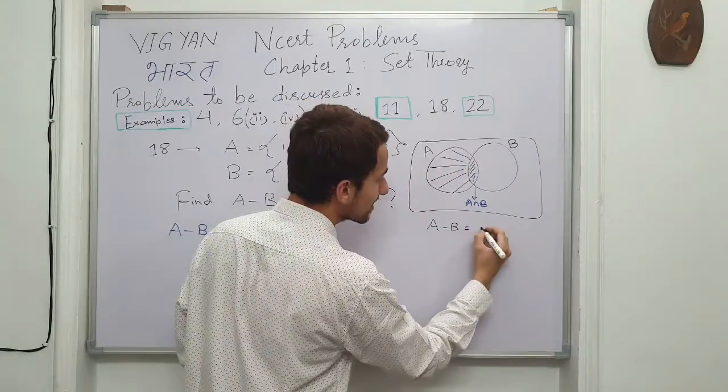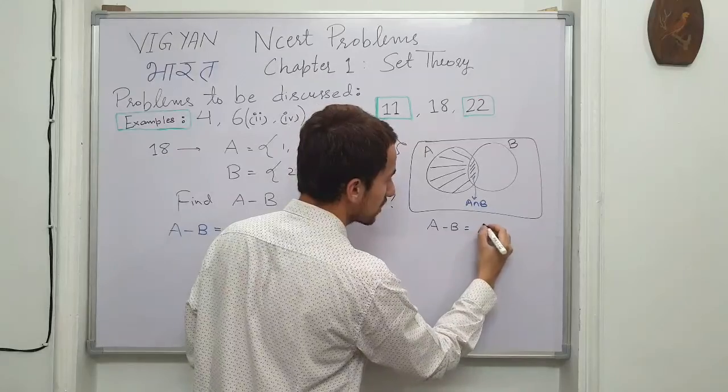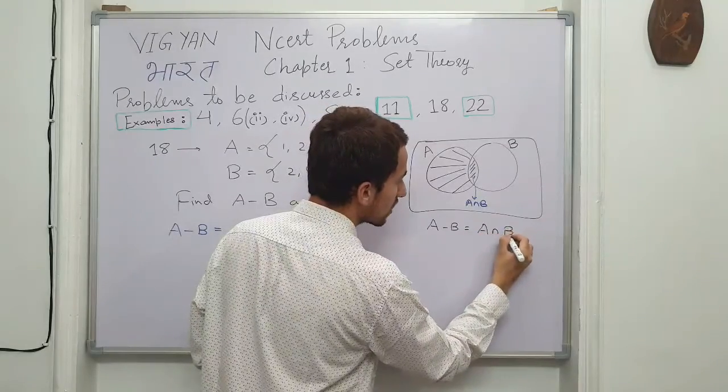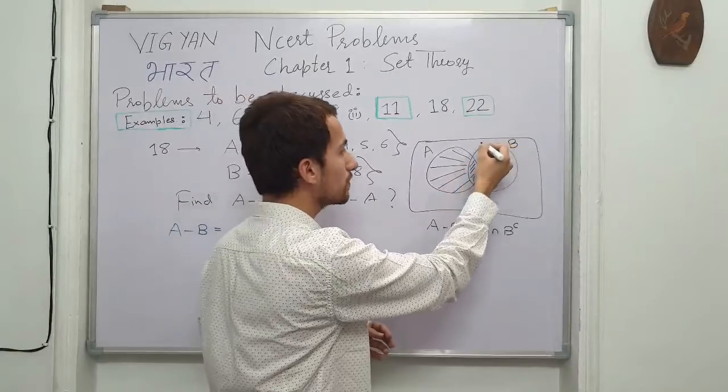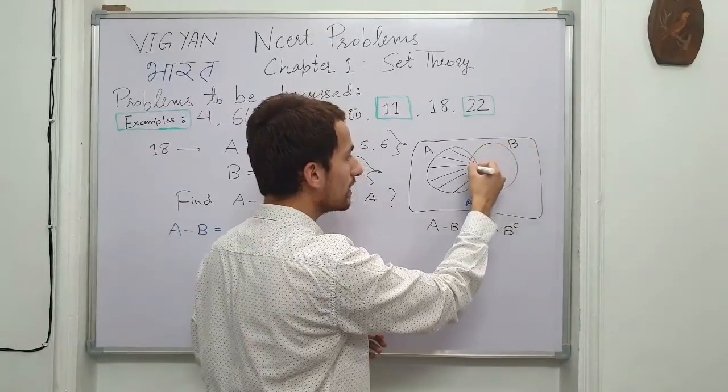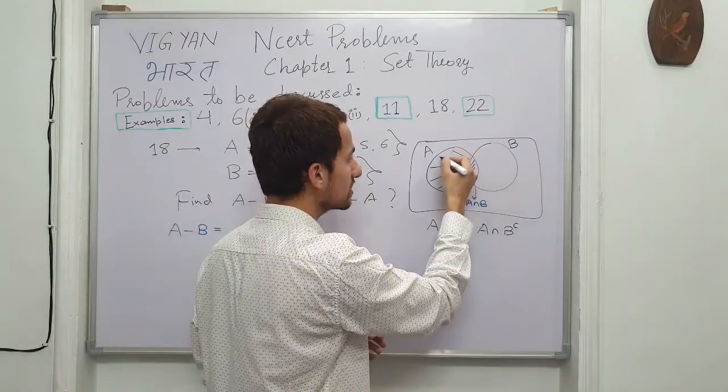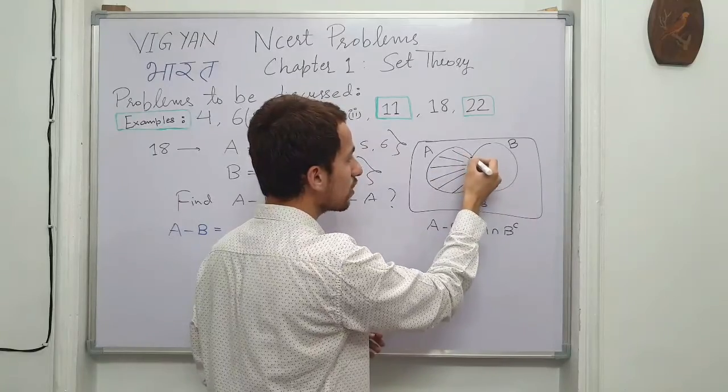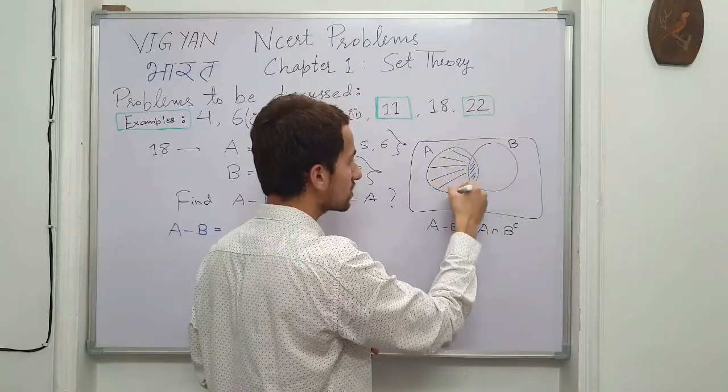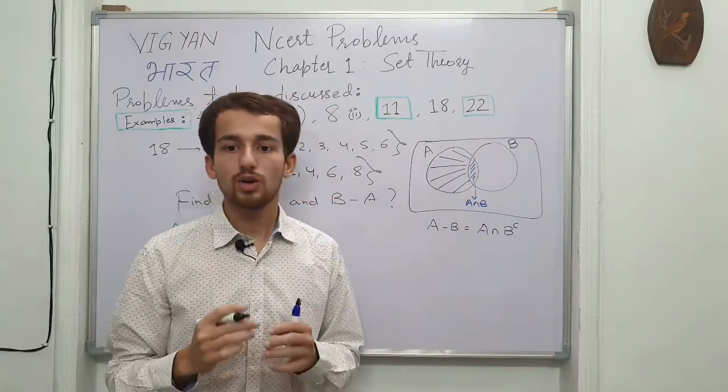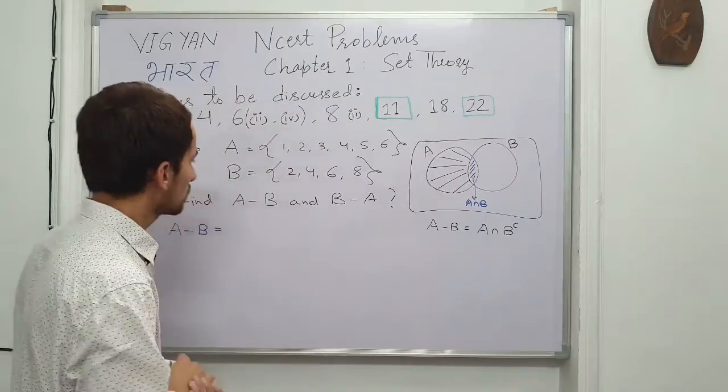This can also be understood in terms of the complements, A-intersection B-complement. The complement of B with reference to A is nothing but this region and the intersection of this part with the whole of A is again this one which I have drawn in the black shaded portion.